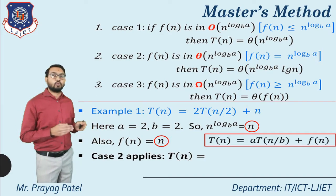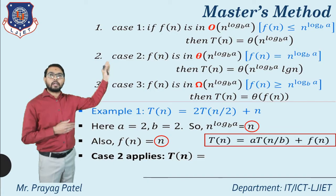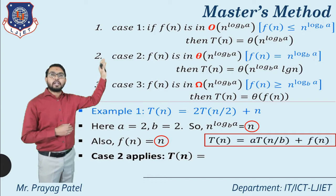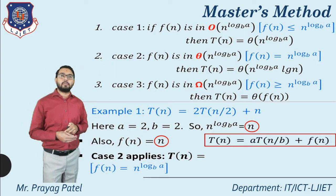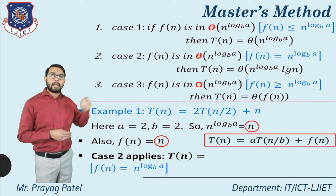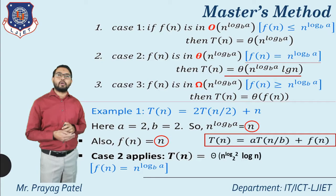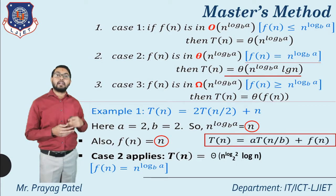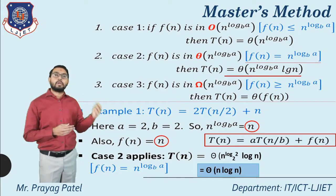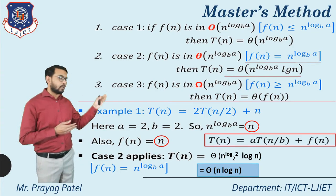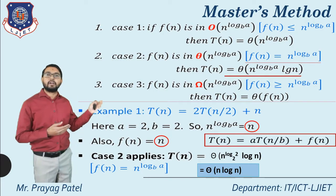So apply case 2. According to case 2, T(n) = Θ(n^(log a base b) · log n) = Θ(n^(log 2 base 2) · log n). Since log 2 base 2 = 1, the final answer is Θ(n log n).